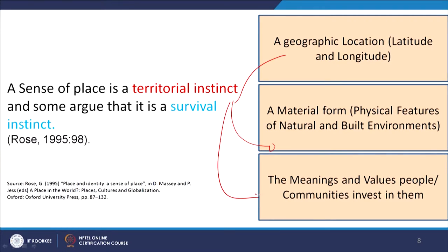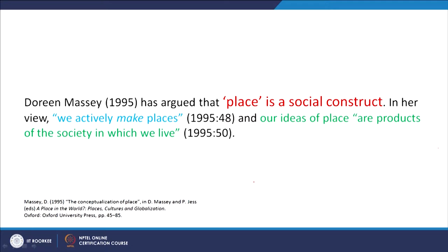More importantly, place is associated with the meanings and values that people or communities invest in it — that is where identity comes in. Many geographers describe place as a social construct. Doreen Massey talks about how we actively make places, and our ideas of place are products of the society in which we live.